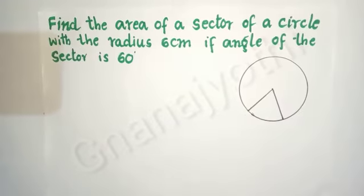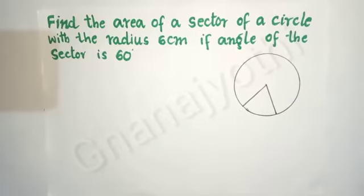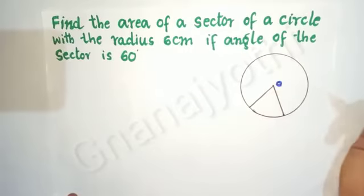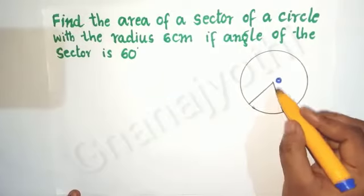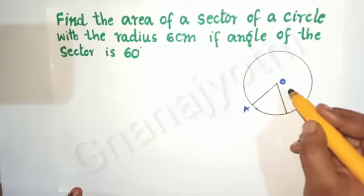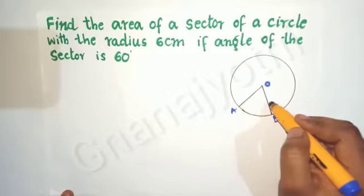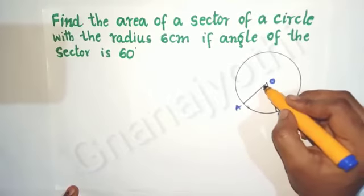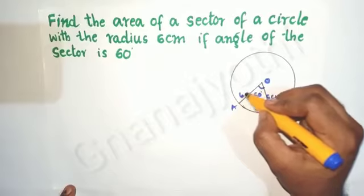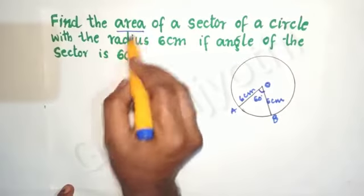Now let us see the next question: find the area of a sector of a circle with radius 6 centimeters and angle of sector 60 degrees. Here I have drawn the circle. This is the center, and here is the sector. OA and OB are the two radii, each equal to 6 centimeters, and the sector angle is 60 degrees. The region between the two radii is called the sector.